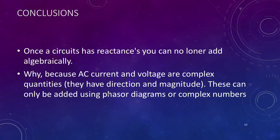So what can we draw from this? Once again, a circuit has reactance, you can't just add or subtract algebraically. Why? Because AC currents and voltages are complex quantities. They have direction and magnitude, and these can only be added or subtracted using phasor diagrams or complex numbers.